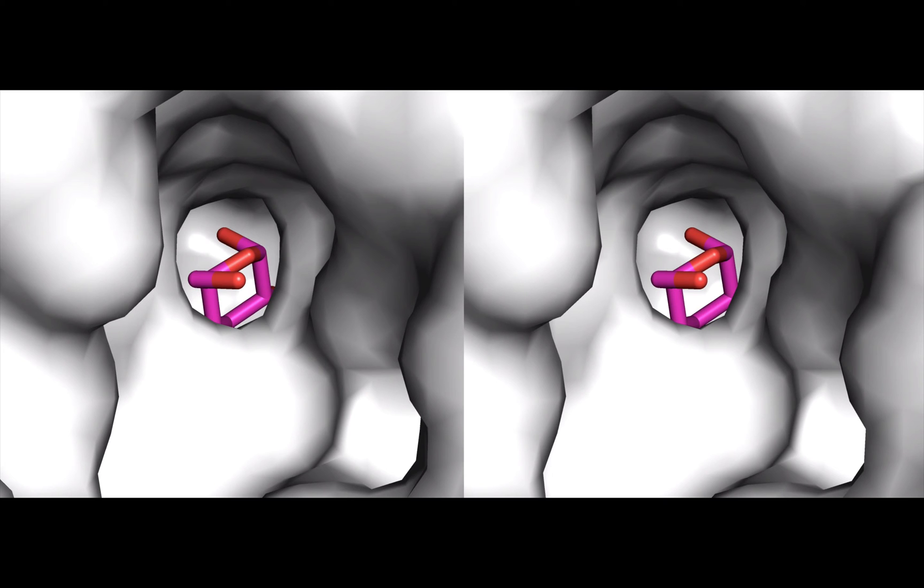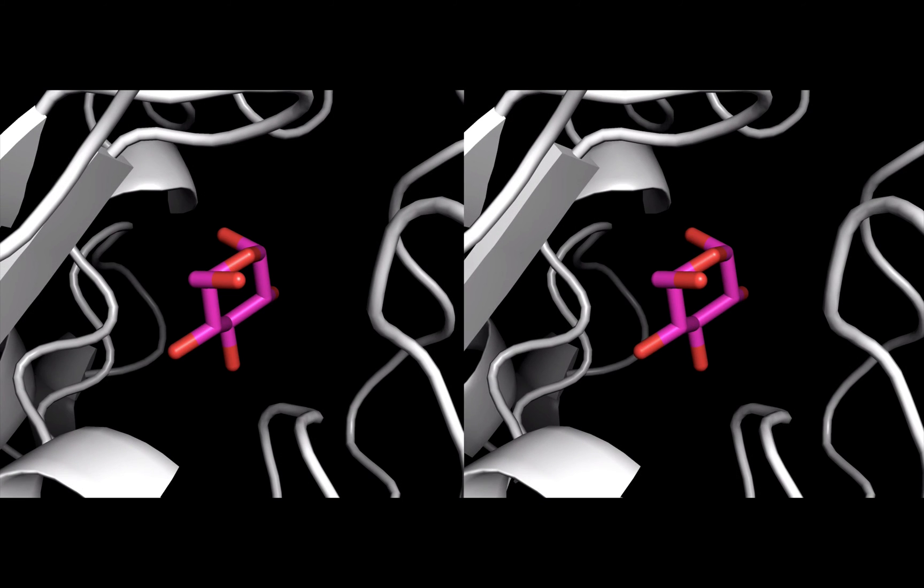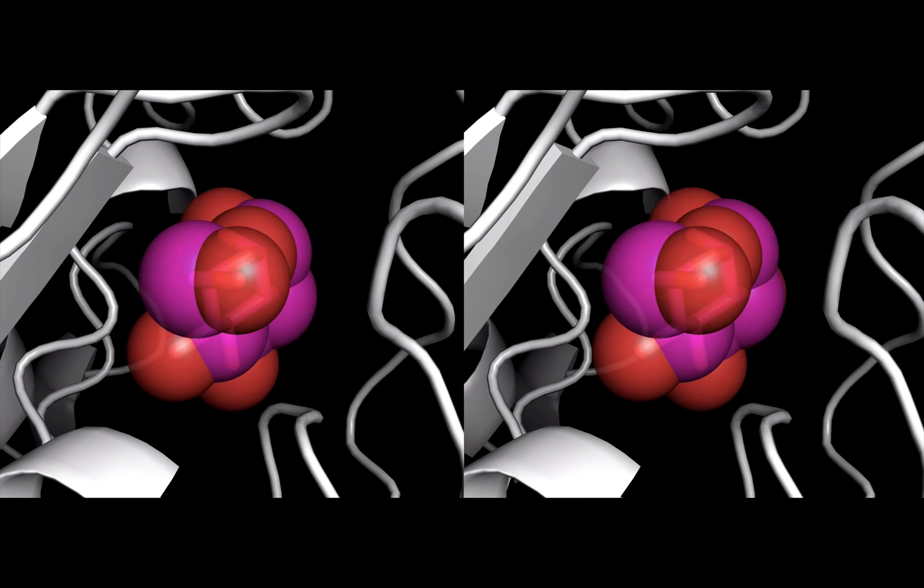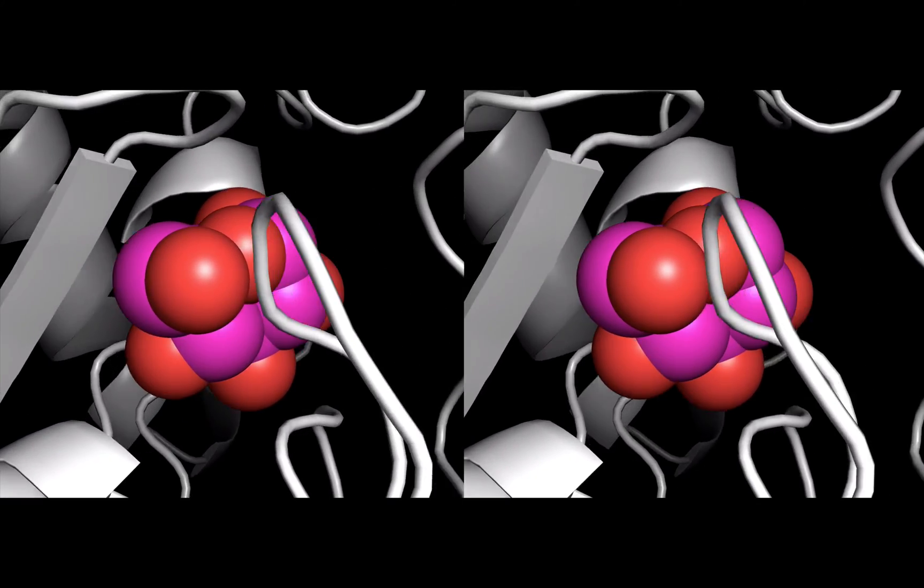It's a little hard to see, so let's change our view of the protein to a ribbon diagram. Another way to represent the glucose molecule is using a sphere representation. Kind of like the surface rendering of the protein, this shows the space that the molecule is taking up within the enzyme.